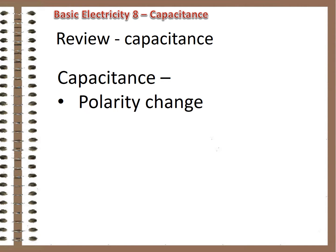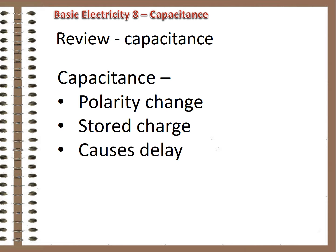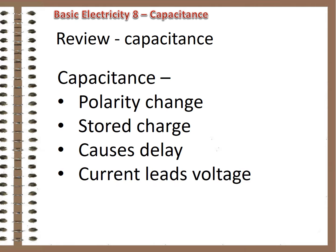Capacitance comes from the polarity change that occurs 50 or 60 times a second in AC circuits. Because of the charges built up on either side of the circuit, there's a delay before the voltage changes. In a capacitive circuit, the change in current leads the change in voltage.